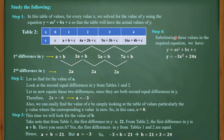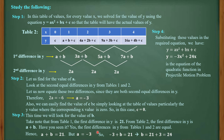Substituting all values into the standard form: y = −3x² + 24x + 0. Therefore, the equation of the quadratic function for the projectile motion problem is y = −3x² + 24x.